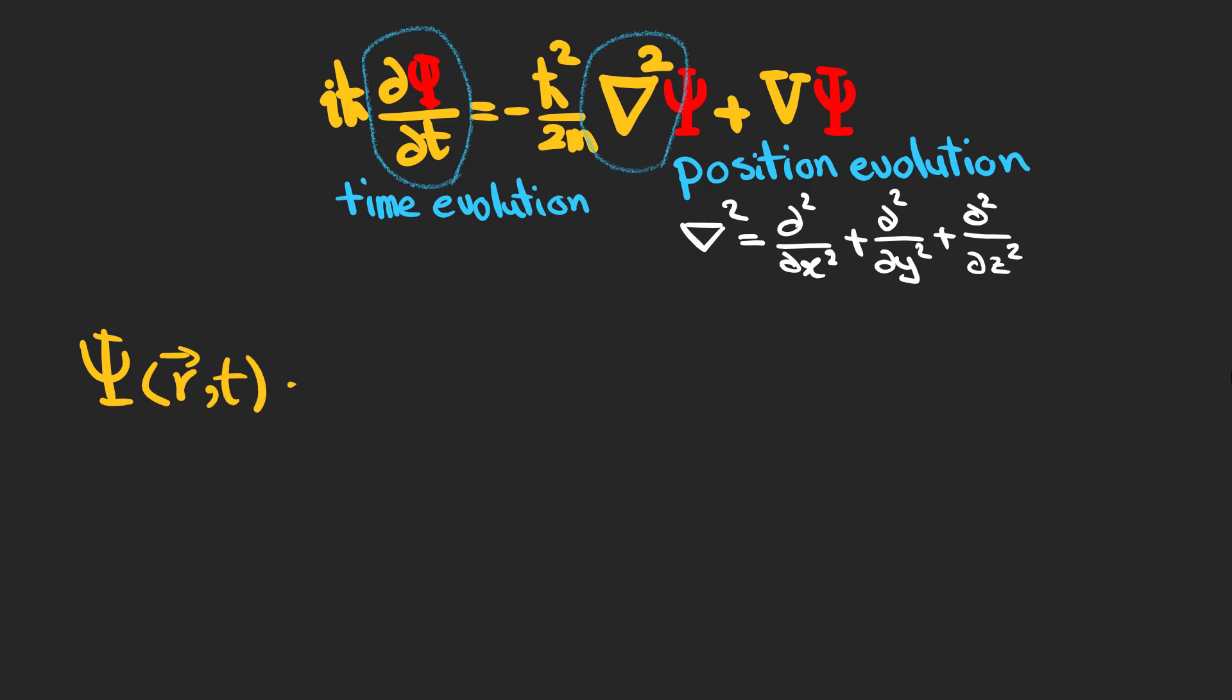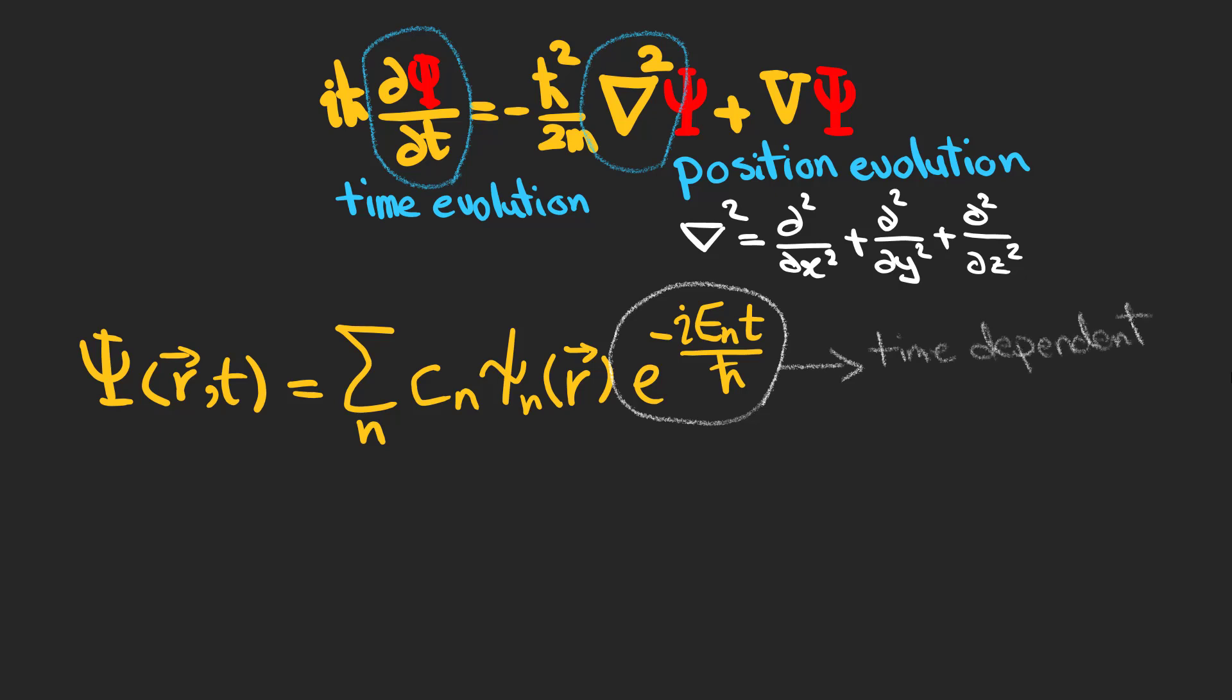The general solution for this equation consists of three important parts. First, a time-dependent component that shows the wave function's evolution in time and is an exponential function that includes different possible energies the system can be in.